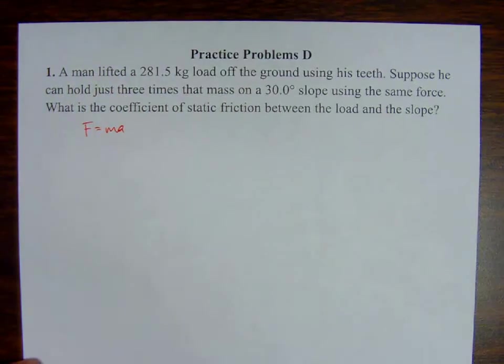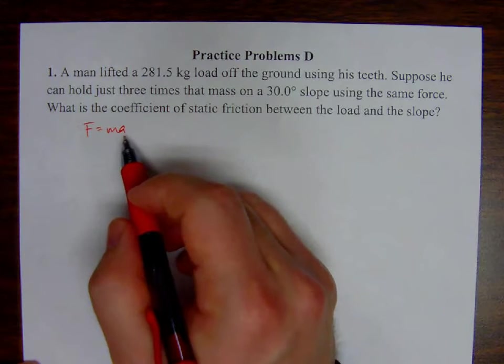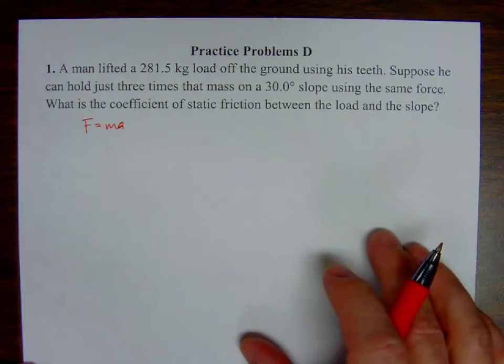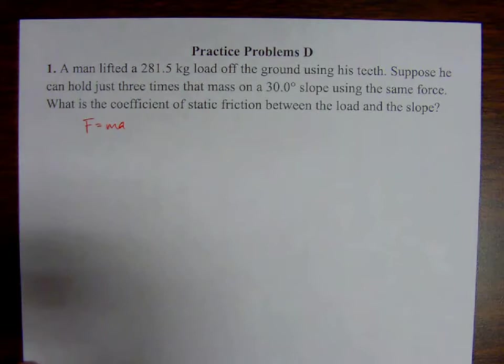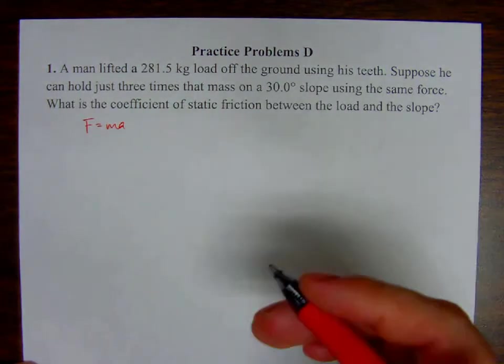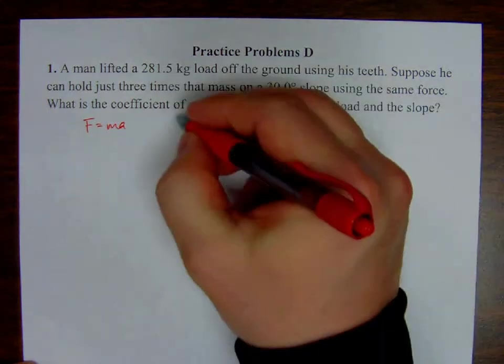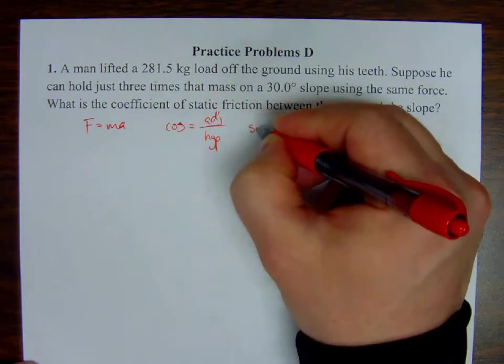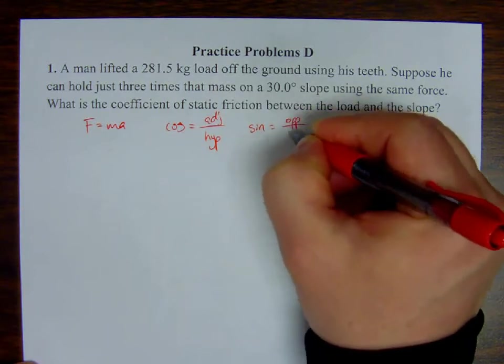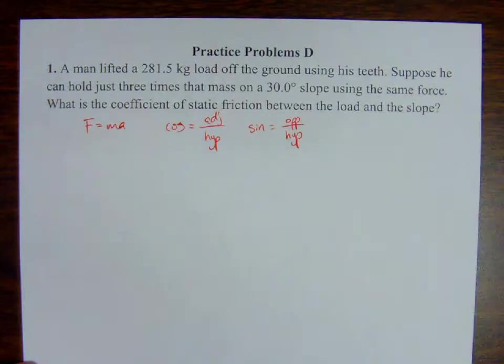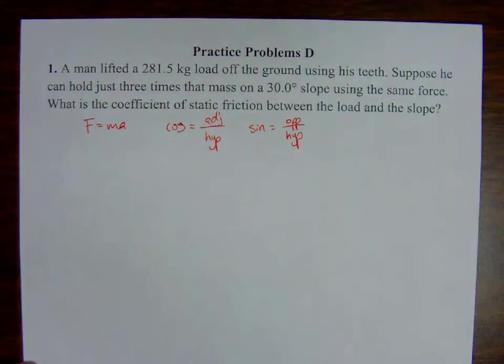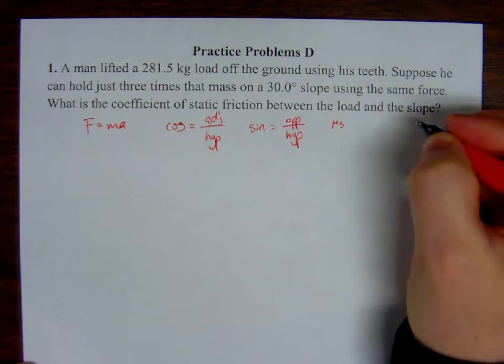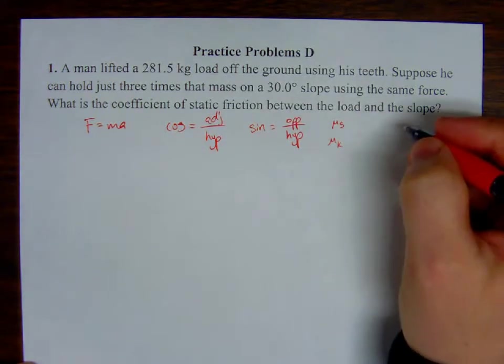We'll definitely be using that. We'll be understanding that a lot of the time we can replace A with G because we're talking about acceleration due to gravity. We're going to be using some sine cosine. Remember, cosine equals adjacent over hypotenuse, sine equals opposite over hypotenuse.